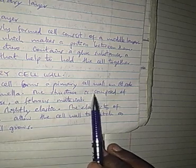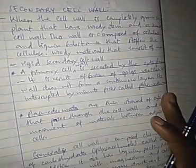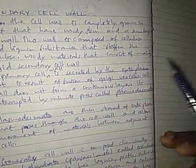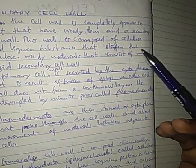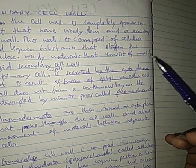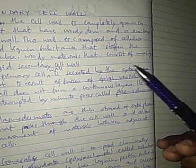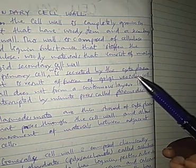The primary cell wall is formed on each cell's side of the middle lamella. It is composed of cellulose, a fibrous material, and it is slightly elastic. The elasticity of cellulose allows the cell to stretch during cell growth. The primary cell wall is formed soon after cell division, and if the cell continues to grow, rigidity or strengthening materials are added to the primary cell wall.